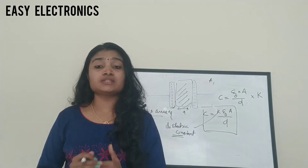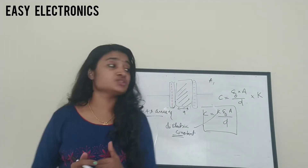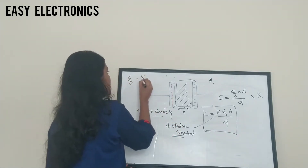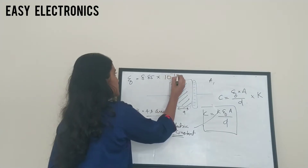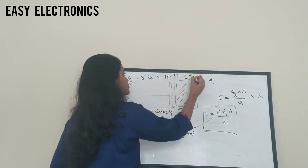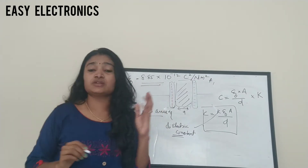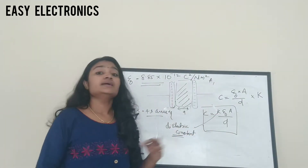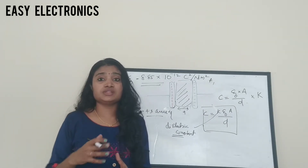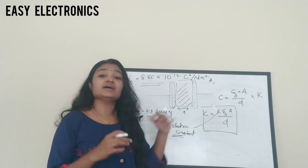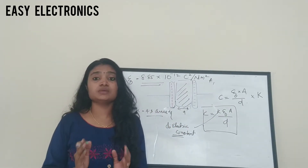The value of ε₀, the permittivity of free space, is 8.85 × 10⁻¹² Coulomb² per Newton·meter². K is the dielectric constant, which has different values for different materials used between the metal plates. A is the area and D is the distance of separation between the metal plates.